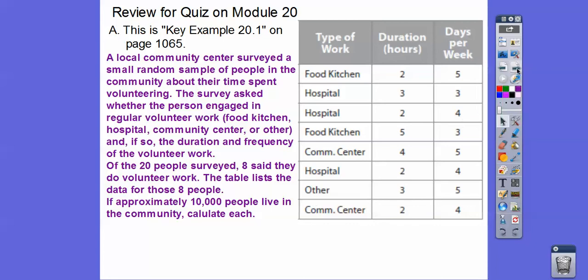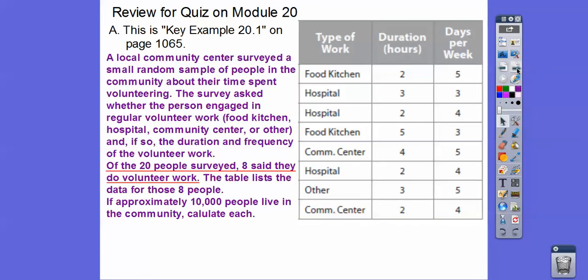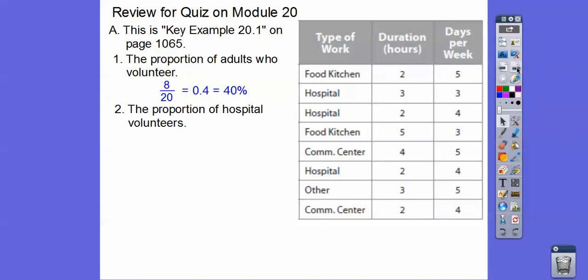The proportion of adults who volunteer was 8 out of 20, which gives us 40%. The proportion of hospital volunteers—now we're just focusing on the 8 volunteers—so what's the proportion of them that are hospital people? So 3 of them. So 3 of the 8, and that is 37.5%.